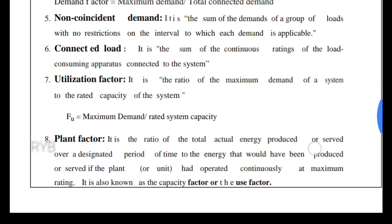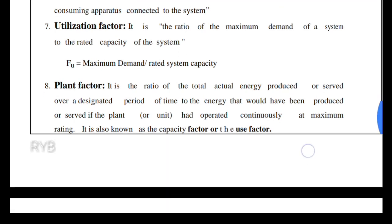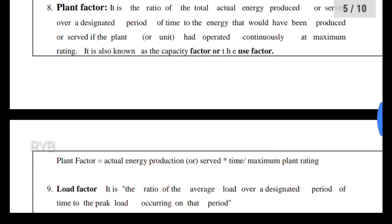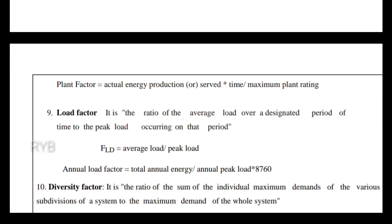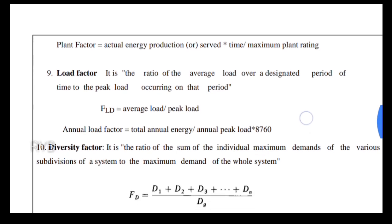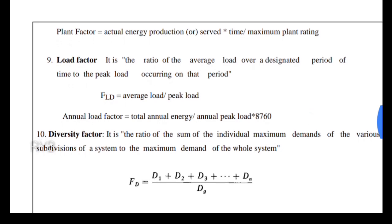Plant capacity factor has already been studied in the electrical power generating system. Load factor is the ratio of average load to maximum demand — the average load over a designated period of time divided by the peak load gives the load factor. Annual load factor is calculated as: total annual energy consumption divided by (annual peak load × 8760 hours).